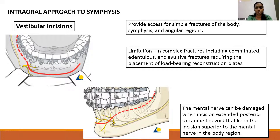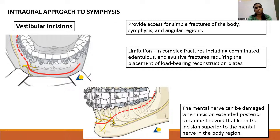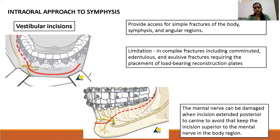Regarding the different approaches to the mandible: the symphysis region can be approached with a vestibular incision, which provides good access to the fracture. However, in cases of comminuted fracture or edentulous fracture requiring heavier plates placed at the lower border of the mandible, a vestibular incision cannot be used. The incision is placed along the vestibule, 4-5 mm below the attached gingiva, leaving a cuff of soft tissue for suturing. At the mental nerve region, the incision moves slightly upwards toward the attached gingiva.